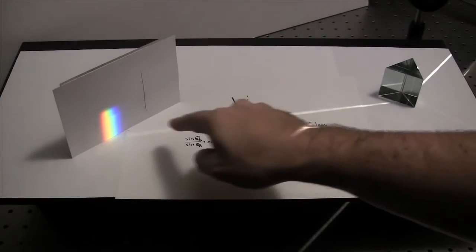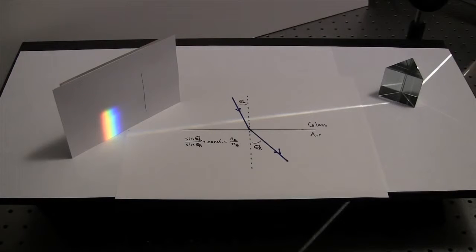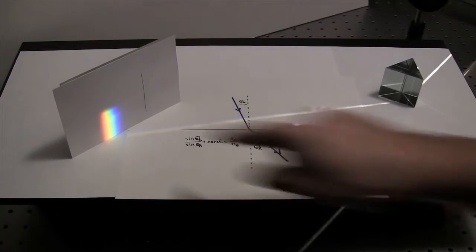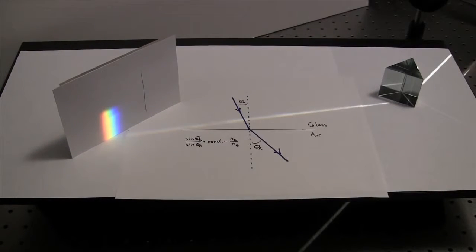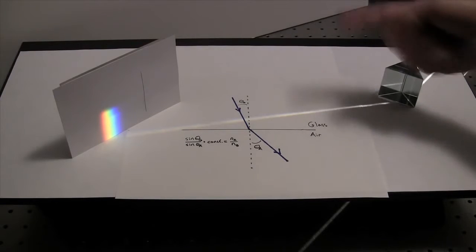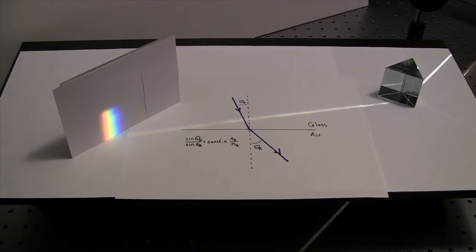So this led him to the conclusion that the white light entering the prism wasn't really white. It was a combination of all these different colors. And that all the prism was doing was separating them in angle by this varying refractive index.